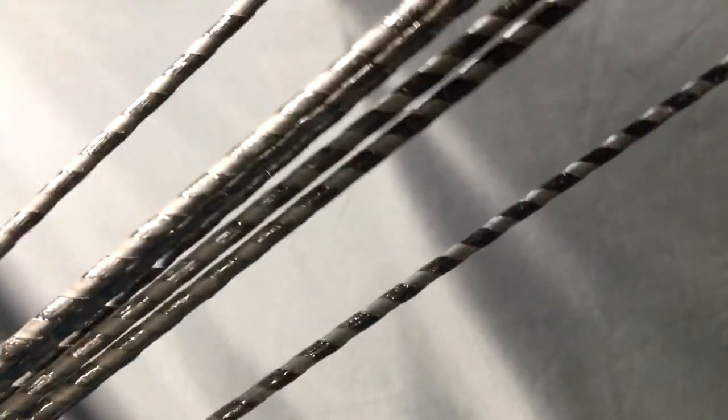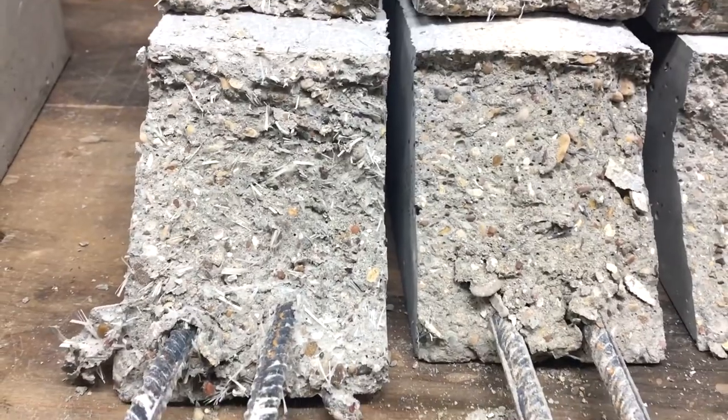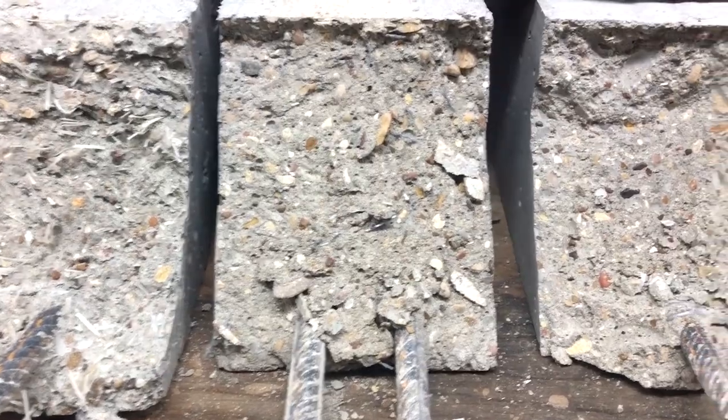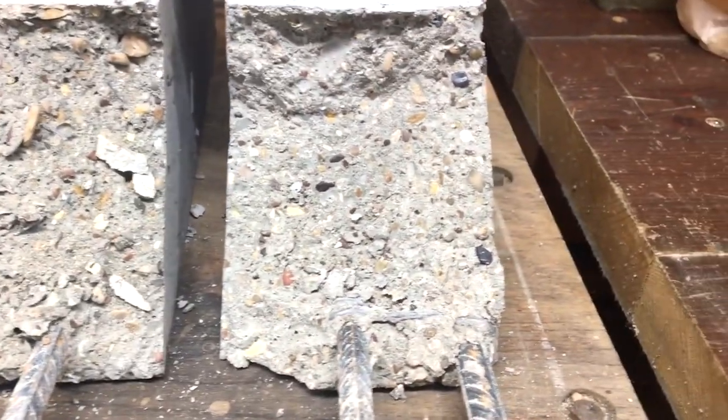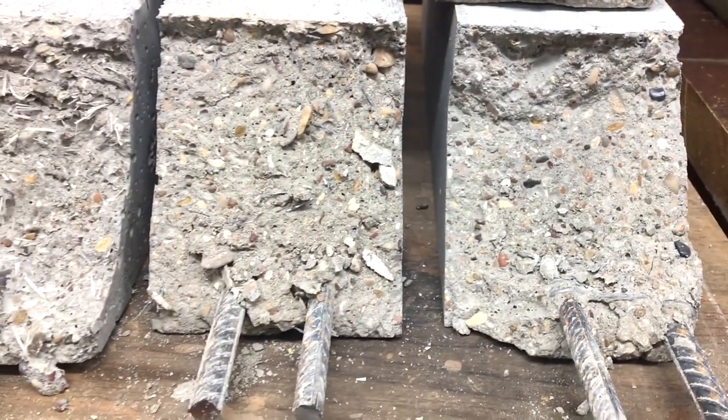This is reinforcement made of basalt. Remelted volcanic rock forced through tiny nozzles to create fibers that are extremely strong. Options like this often cost more than steel rebar, in some cases a lot more. But the major impediment to the use of these newer, more innovative types of reinforcement isn't just the cost.